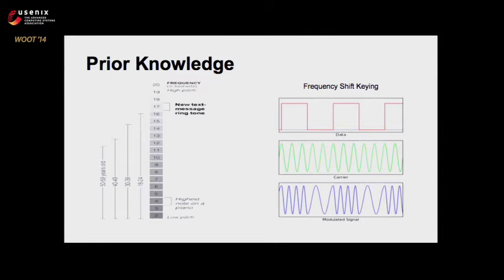On the right side we have a diagram for frequency shift keying. There are a lot of ways to convert digital into analog and back again, but this is a very intuitive and simple one we thought would work for our experiments. In the top row you can see binary data — we have 10101. The second row is a carrier wave; in our case we'd want this to be a very high frequency above adult human hearing range. The last row is a combination of the two — we modulate our carrier wave with our digital data.